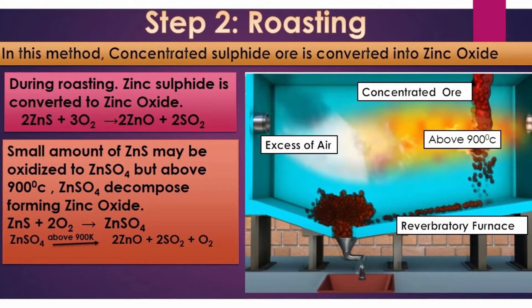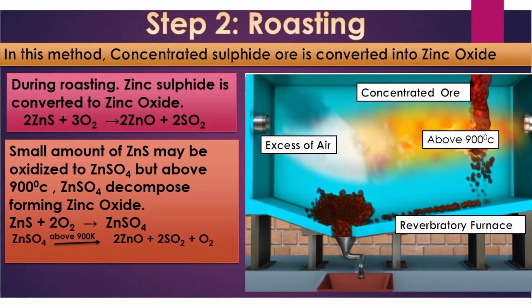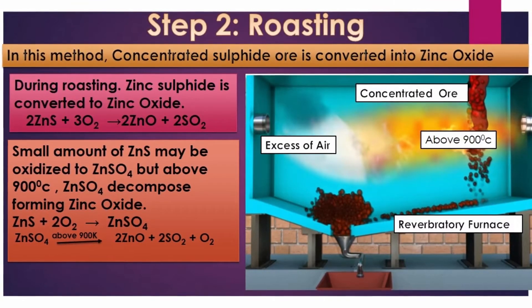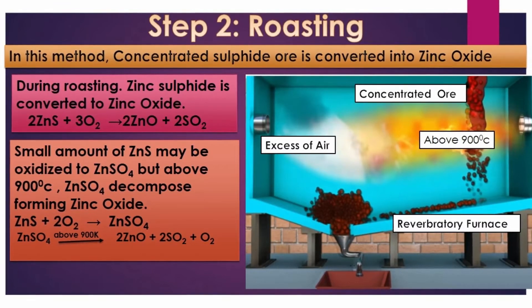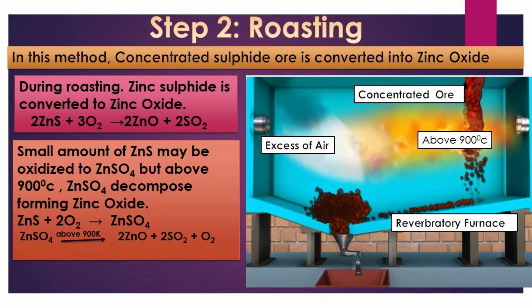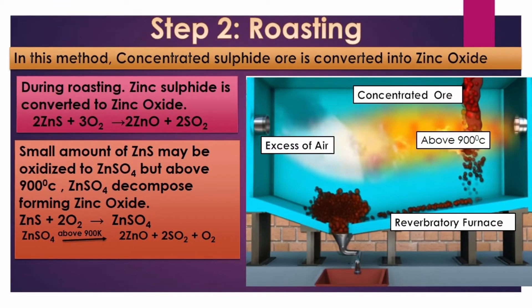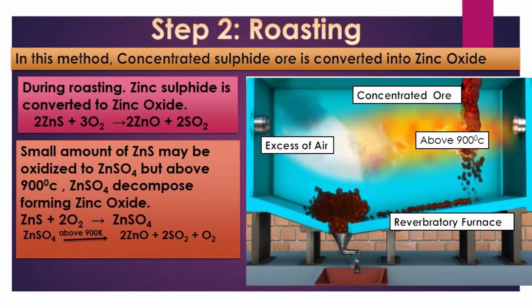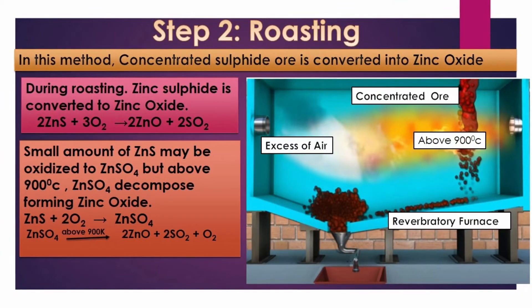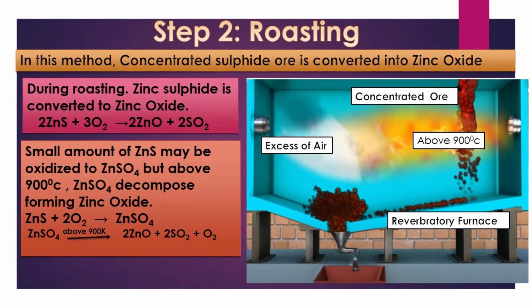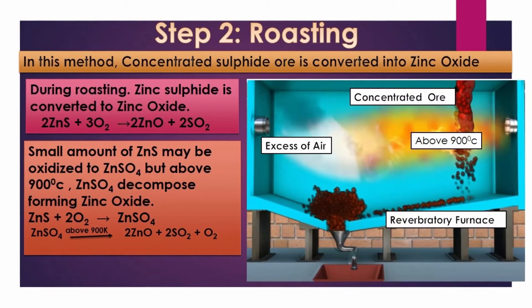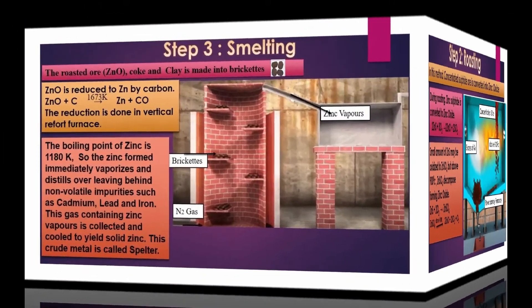In this method, concentrated zinc sulphide ore is heated in the presence of excess oxygen above 900 degree Celsius in a reverberatory furnace, so zinc sulphide will get oxidized to zinc oxide. During roasting, a small amount of concentrated zinc sulphide may be oxidized to zinc sulphate. But this zinc sulphate formed will decompose above 900 degree Celsius to form zinc oxide.